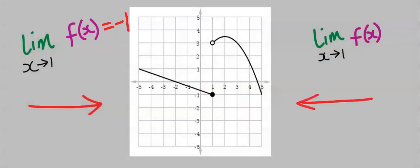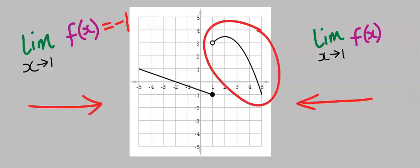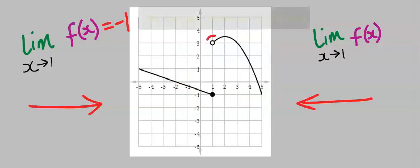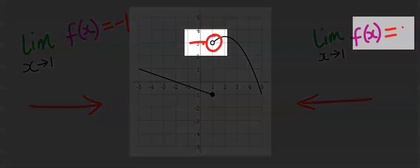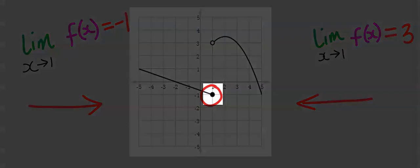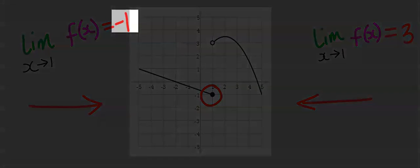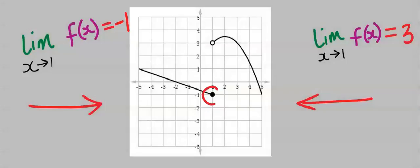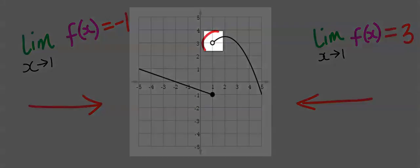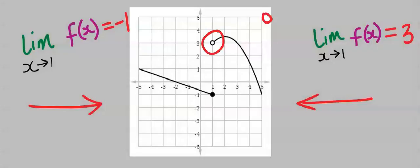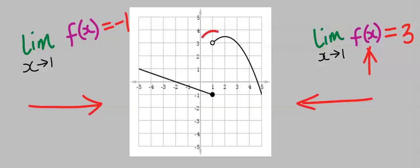Next, we are going to approach this limit from the right. Hence, we are going to consider only the right portion, ignoring the left. Here we got 3. Hence, the right-hand limit is equal to 3. The first substitution gave us minus 1 directly. However, from the right-hand side, the open circle means that we actually got 0 over 0 when substituted directly. To remove that point of discontinuity, we applied L'Hôpital's rule and got an answer of 3.